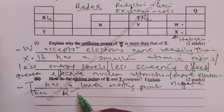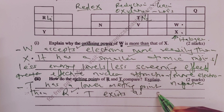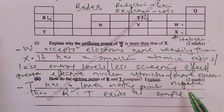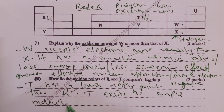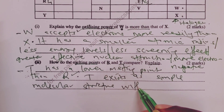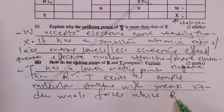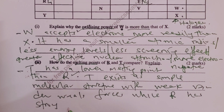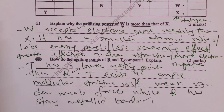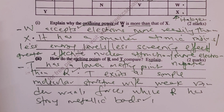The explanation earns the second mark: T exists as a simple molecular structure with weak van der Waals forces between its molecules, while R has strong metallic bonds. This explains why T has a lower melting point than R (or equivalently, R has a higher melting point than T) — two marks total for this question.